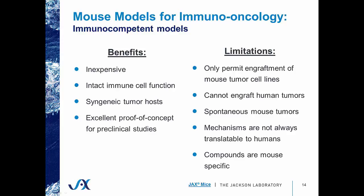Immunocompetent models have their immune systems largely intact. Some of the benefits to using immunocompetent models are that they are, in general, less expensive than their immunodeficient counterparts, they have their immune cell systems and function intact, and they can be used as syngeneic tumor hosts — in which a tumor derived from the same genetic background can be implanted into a recipient mouse. They are also used for proof-of-concept preclinical studies.